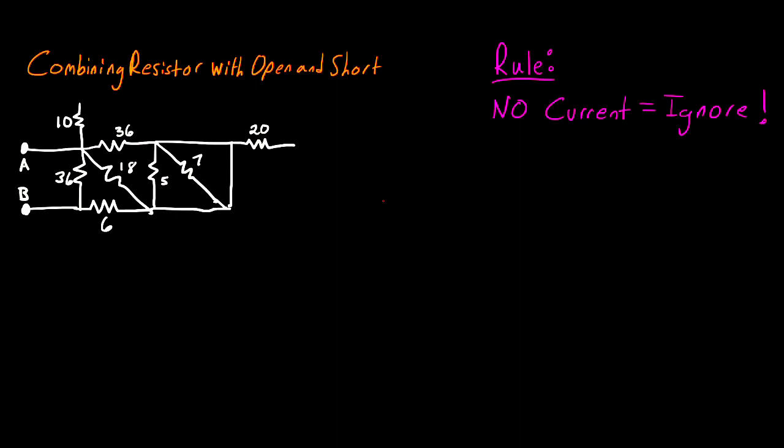In this video, I'm going to be going over a problem on how to find equivalent resistance when you have open and short resistors in your circuit. The big rule to keep in mind for this kind of problem is that if there is no current, you ignore the resistor.